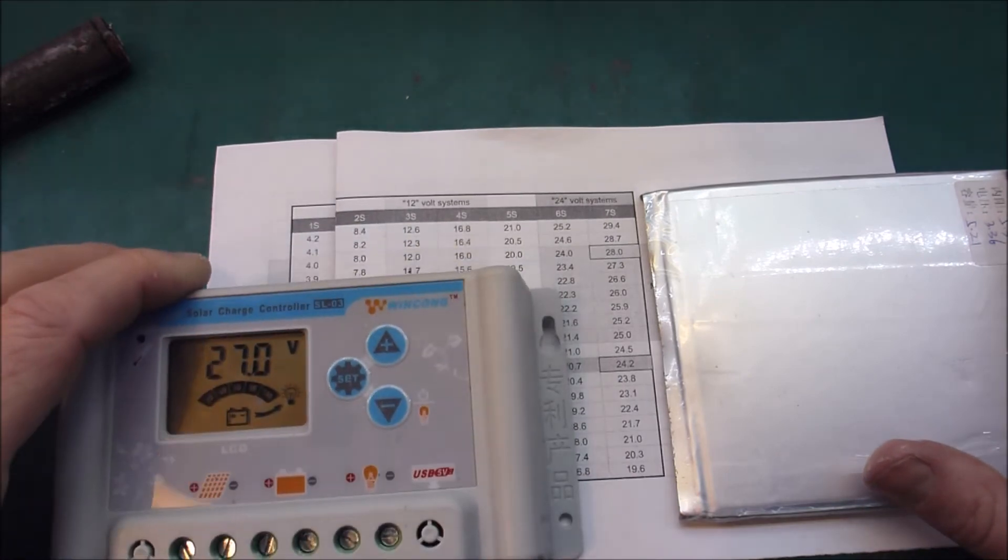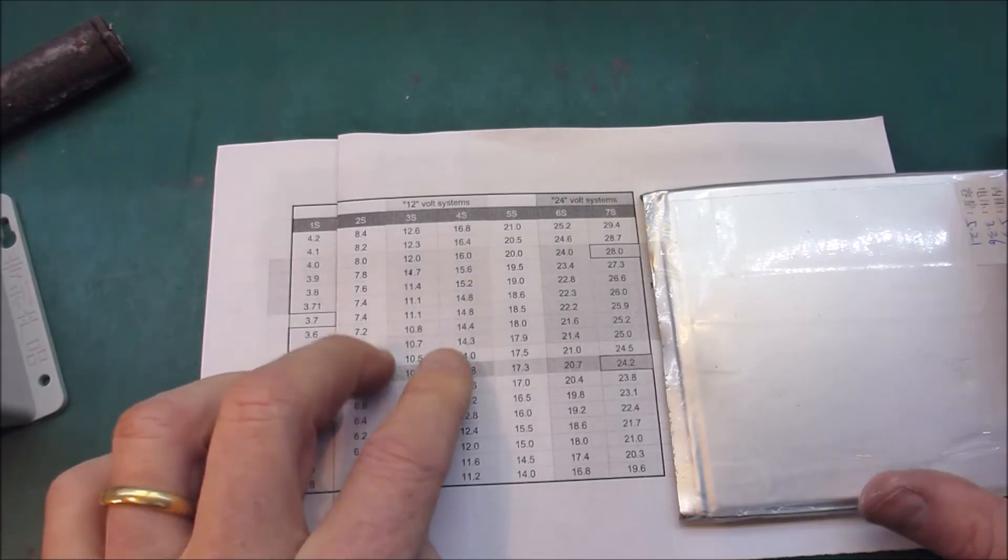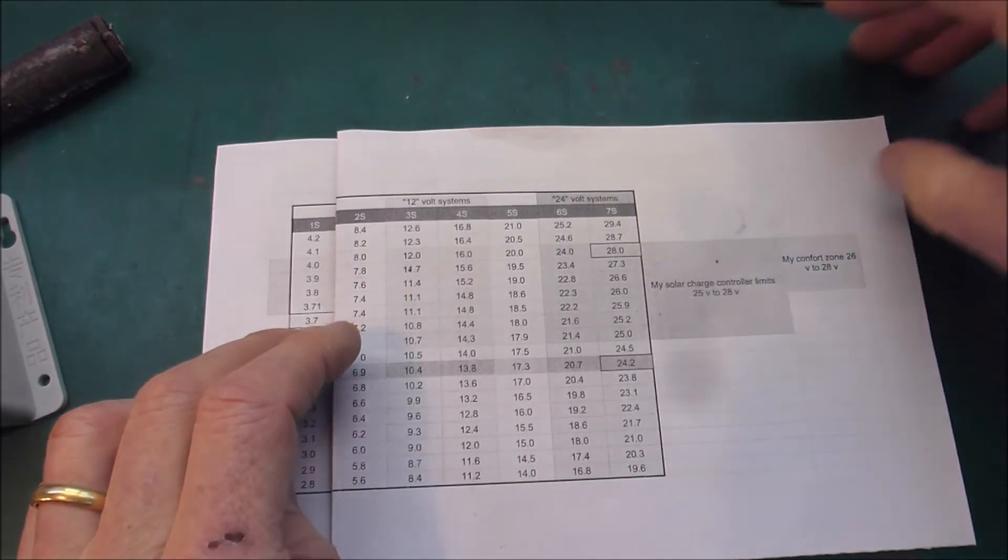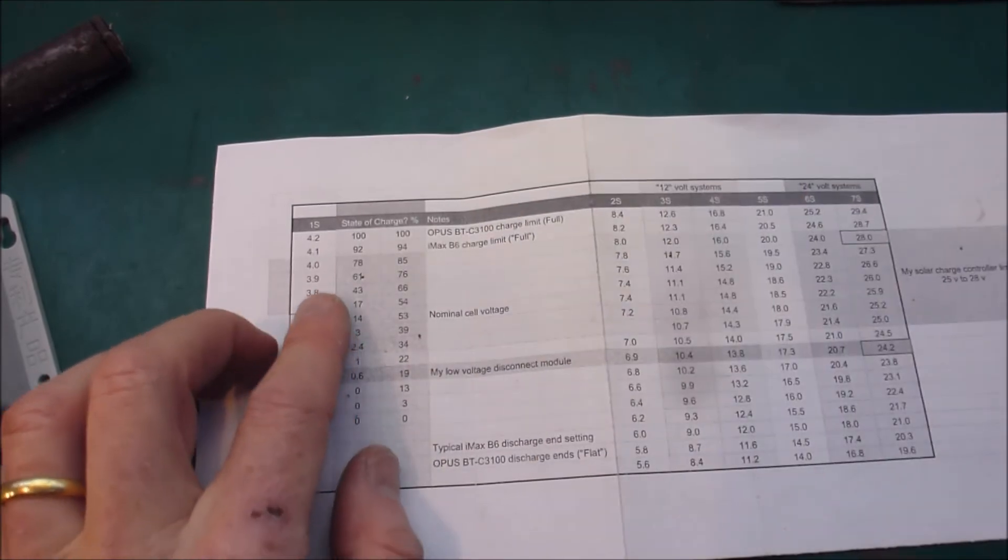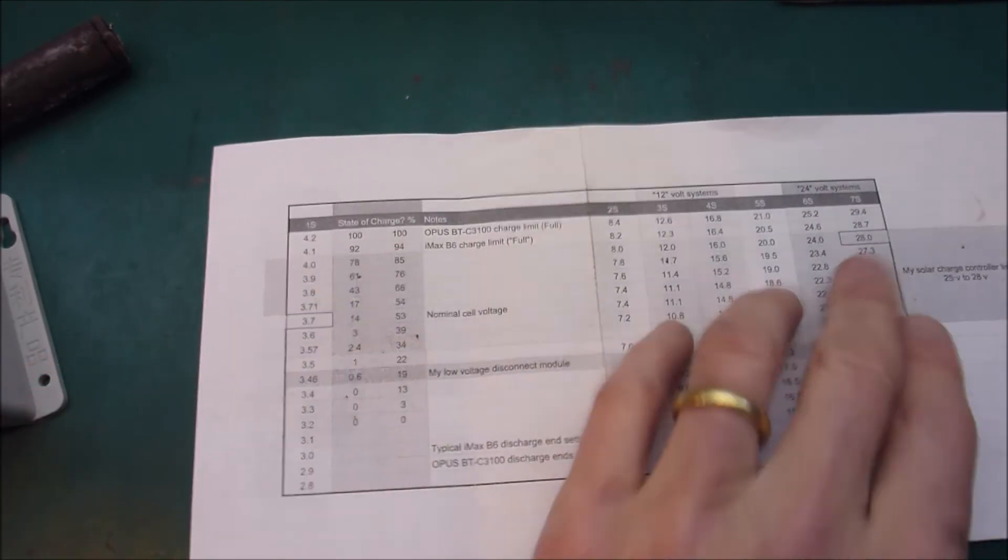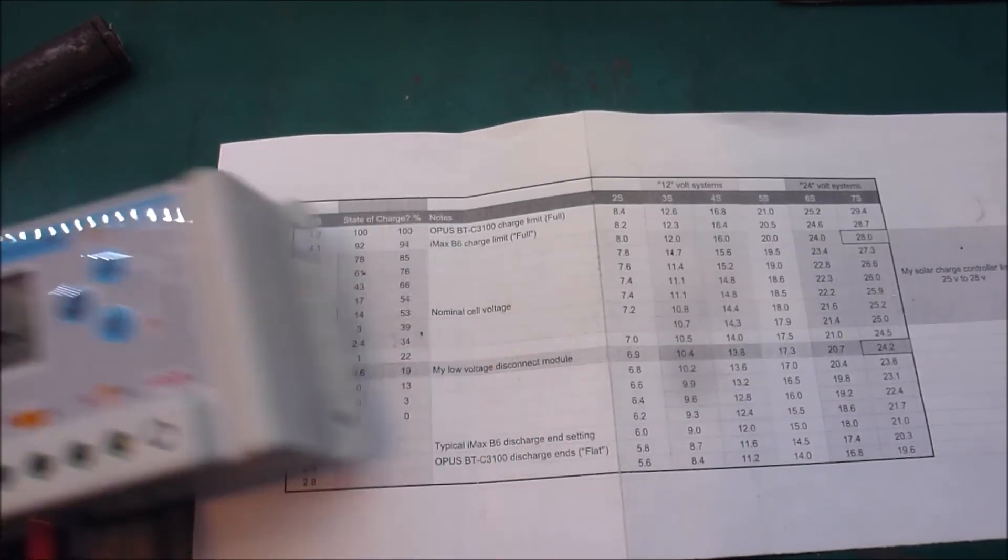But in order to set these you do need to pick a number. So you're just going to have to try and find some correlation between state of charge and voltage in order to finalize on an upper charging threshold.